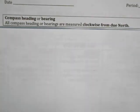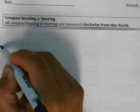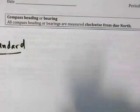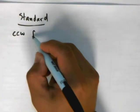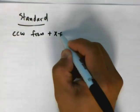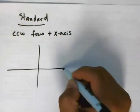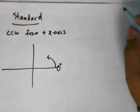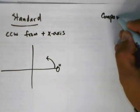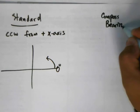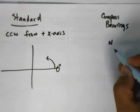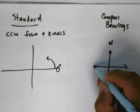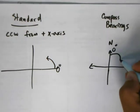Let's do a comparison here in standard form. In standard form you are going counterclockwise from the positive x-axis. In other words, this here is zero degrees and you're rotating this way. In compass bearings, you are starting at due north which is up here. This is zero degrees and you are rotating this way.